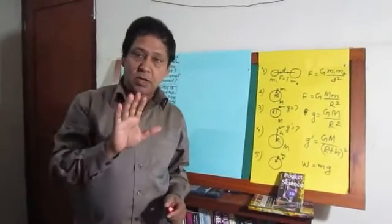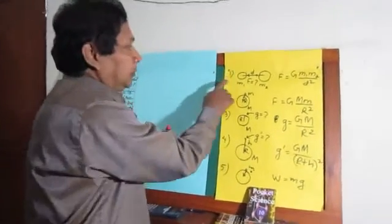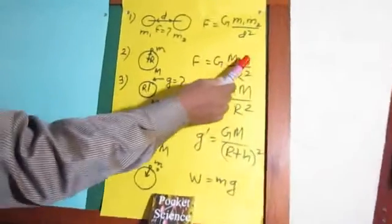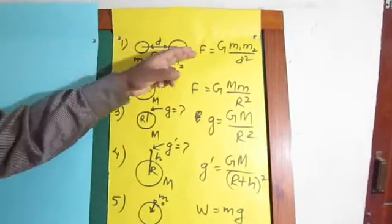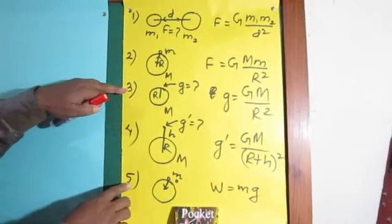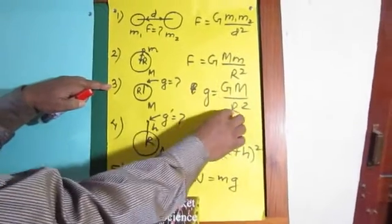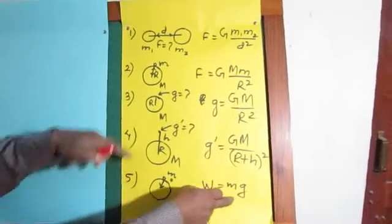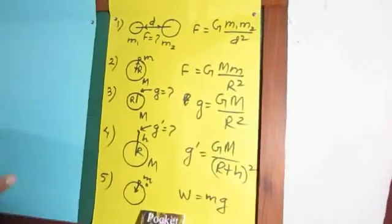Previously I mentioned five equations to solve numerical problems. The first is F = G·M₁M₂/r², and the second is F = G·M·m/r². These two equations were used in previous numericals. Today I'm going to use equation three and five: the third is acceleration due to gravity g = G·M/r², and the fifth is weight of the body W = m·g. Using these two equations we are going to solve numerical problems.